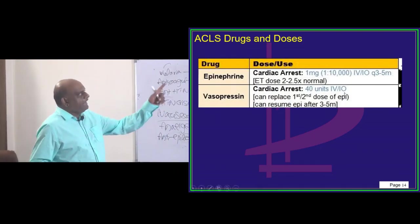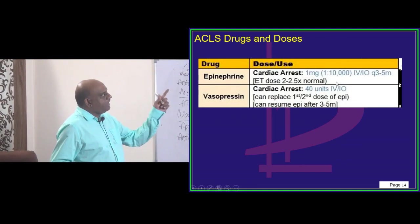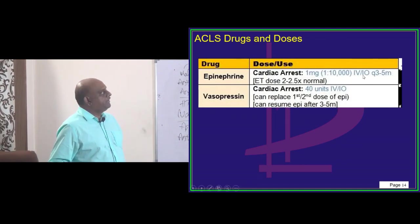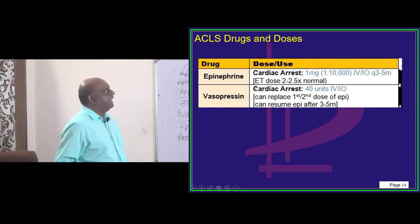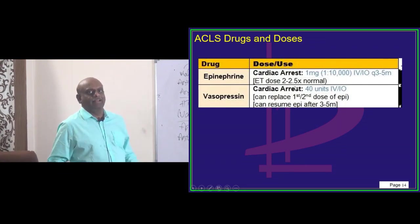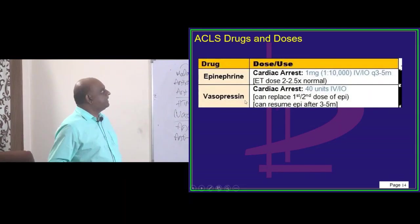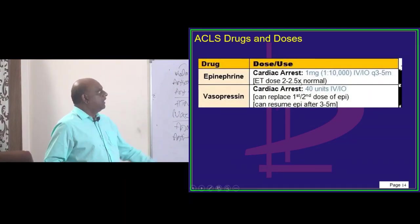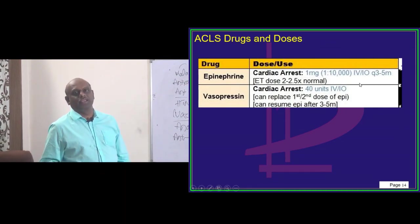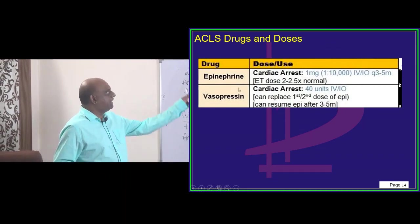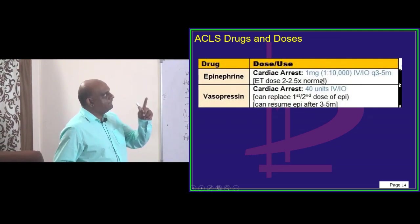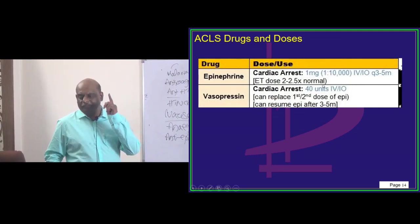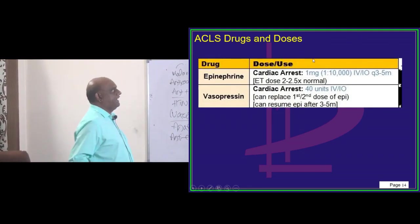1 milligram, 1 is to 10,000 intravenous solution, you need to give over a period of 3 to 5 minutes. If it is endotracheal, you are administering epinephrine, it should be 2 to 2.5 times normal of this intravenous dose. That is epinephrine. 1 milligram is a 1 is to 10,000, is a typical concentration which you should not forget.